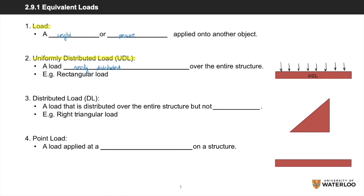An example of a UDL would be a rectangular load. A distributed load, or DL, refers to a load that is distributed or spread out over the entirety of the structure, but not necessarily evenly. An example would be a right triangular load. A point load means a load that is concentrated at and applied only to a single point of a structure.